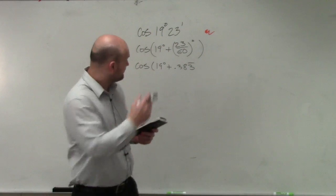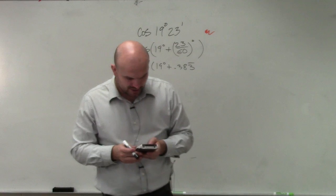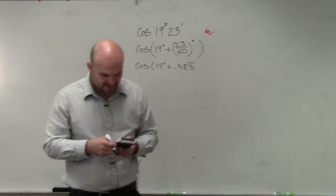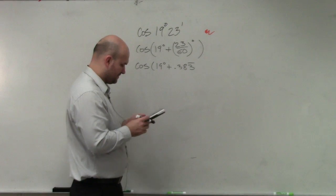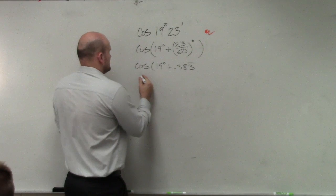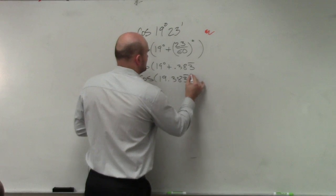So I'm going to type this in. Before I type this in, I want to make sure that this is an angle in degrees. So I'm going to want to go to mode. Make sure my calculator is in degree mode. And then I'll type in cosine of 19. So it's really going to look like this. 19.383 degrees.